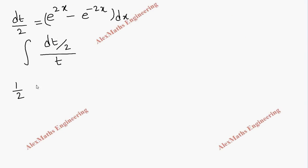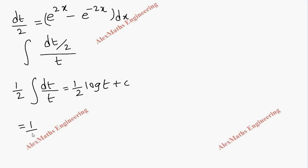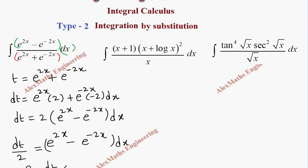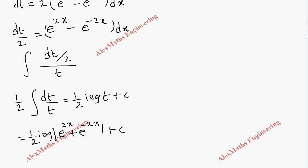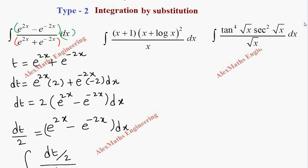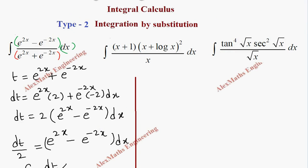We can take the half outside, so integration of dt by t is log t, giving us half log t plus c. Replacing t, we get half log(e^(2x) plus e^(-2x)) plus c. Using the substitution method we integrated the given expression. Now let's solve the second problem.